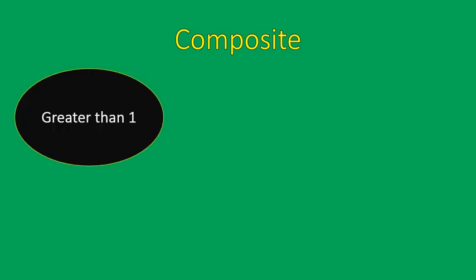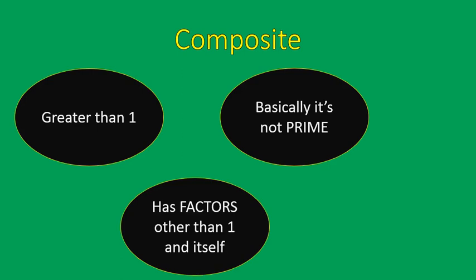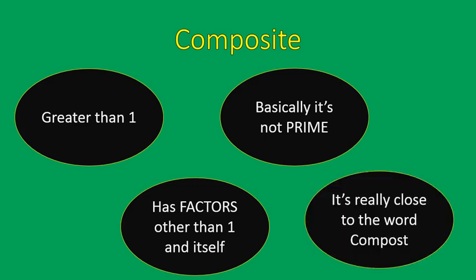So what do you think a composite number would be? First off, it also has to be greater than one. Basically, it's not prime — it is not a prime number. So it has factors other than one and itself. That's what a composite number is. It has factors other than one and itself — and it's really close to the word 'compost,' if you noticed that.